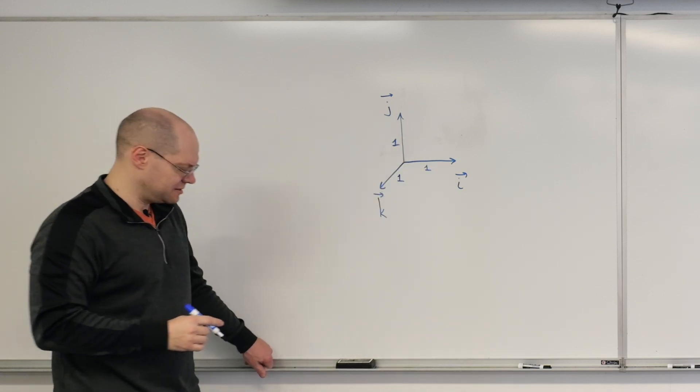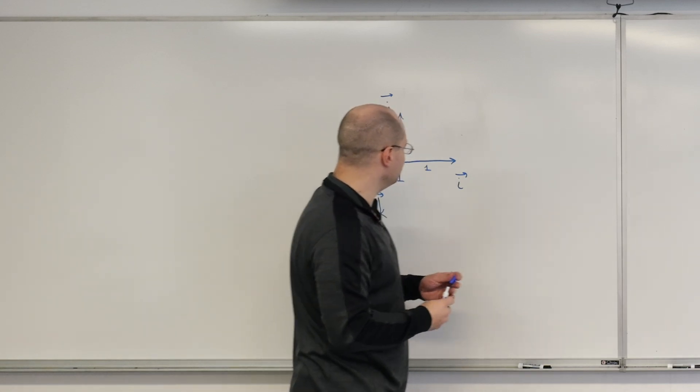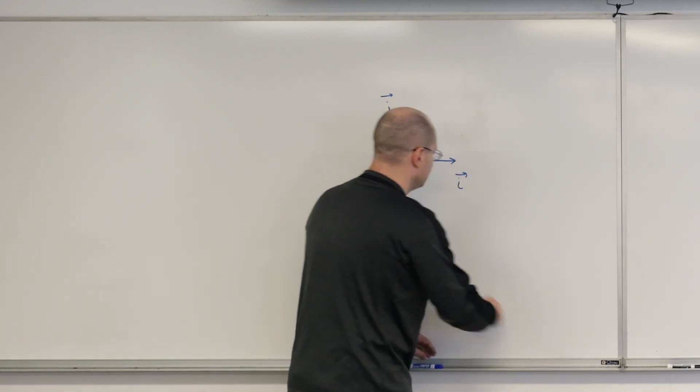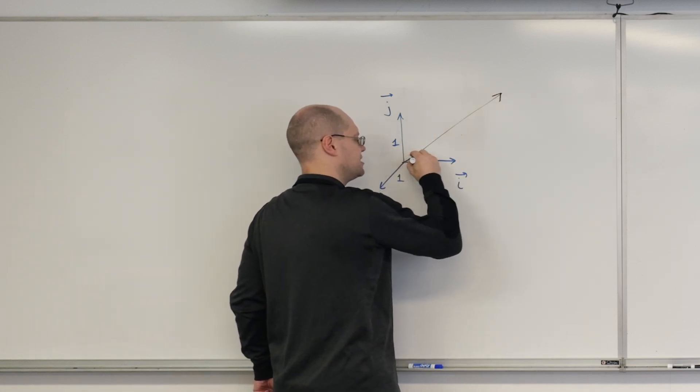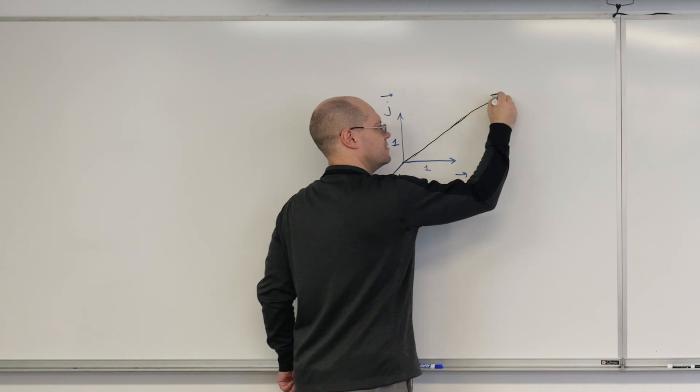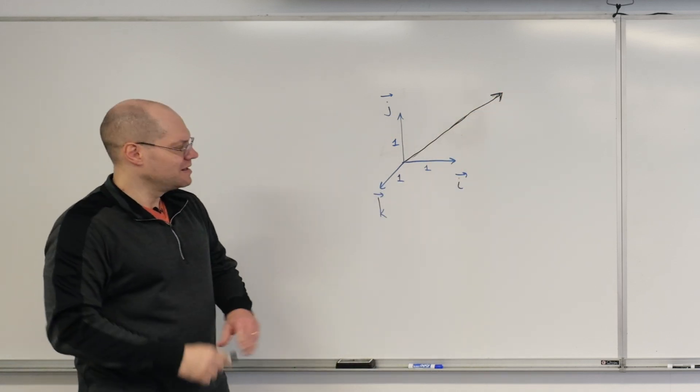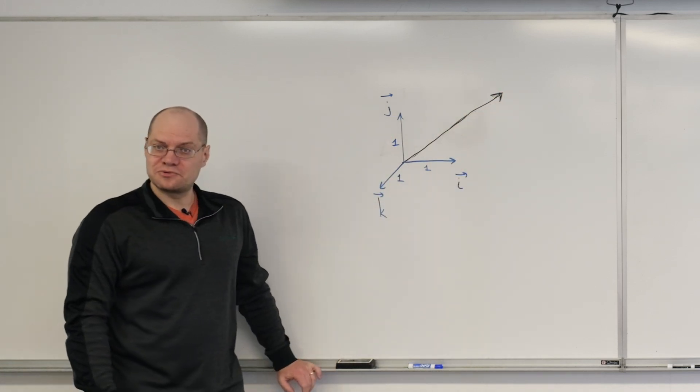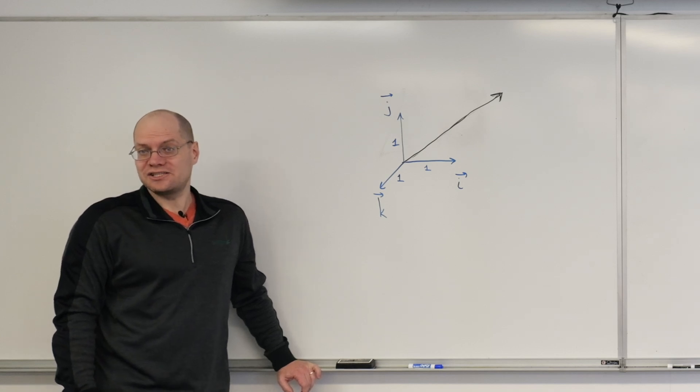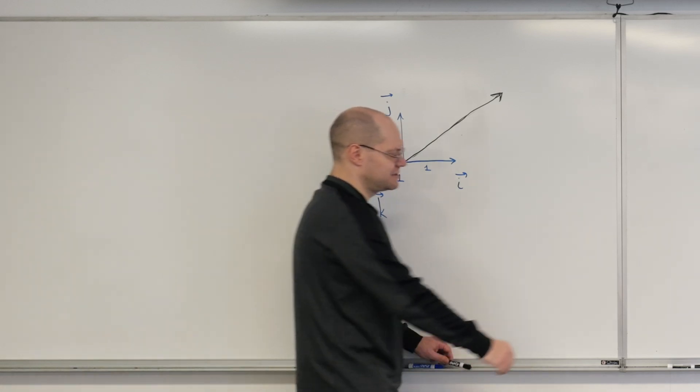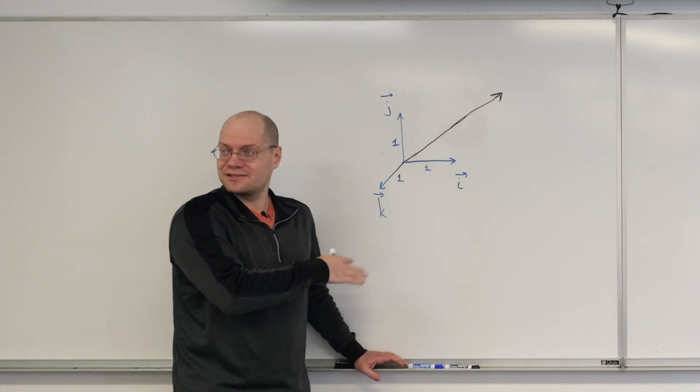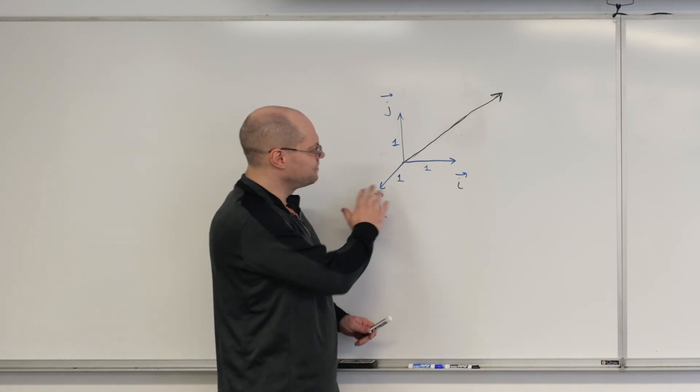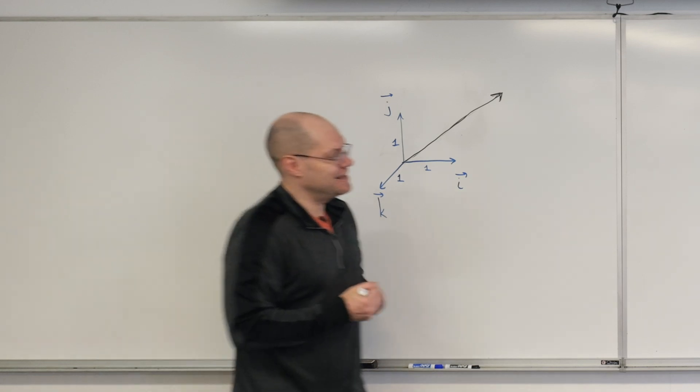So that's our basis. And now suppose we have a vector in three dimensions. We'll call it v. Maybe I'll draw it like this. It's hard to tell which way it points, but it points in some direction. And our goal is to decompose it with respect to i, j, and k. So that's our starting point. A Cartesian basis. But then we'll actually move on to an arbitrary basis and we'll see what changes. This is the simplest situation.